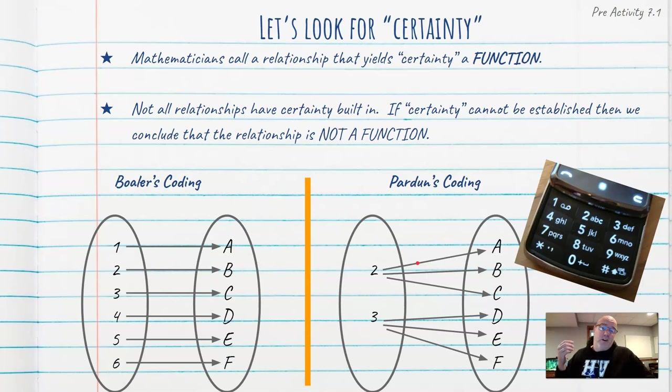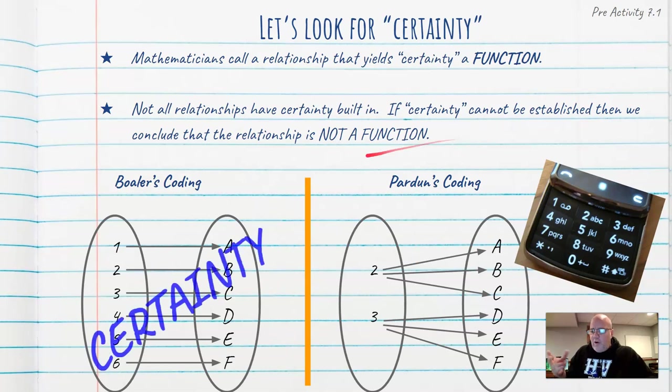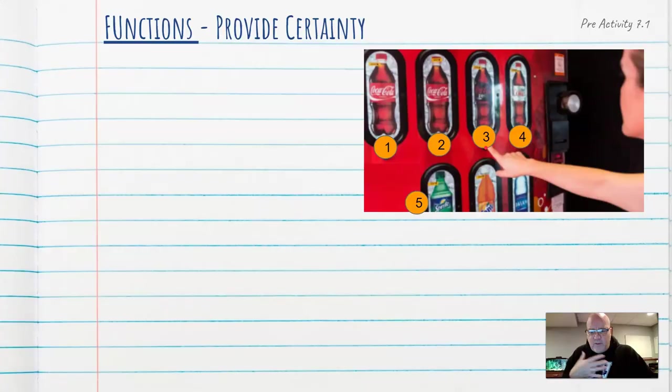So if I just said I used the number two to write a letter, I can't be certain exactly what letter I wrote. I could have written an A, I could have written a B, I could have written a C. So Bowler's coding represents certainty. My coding that I used, there was no certainty.